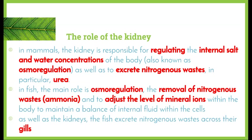In fish, the removal of nitrogenous wastes — in this case ammonia — and adjusting the levels of mineral ions within the body to maintain a balance of internal fluid within the cells are also key roles. As well as the kidneys, fish are also able to excrete nitrogenous wastes across their gills. Depending on whether they're in freshwater or saltwater, fish have that secondary organ they can use to excrete nitrogenous wastes.